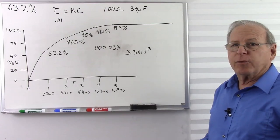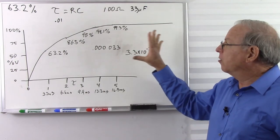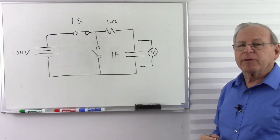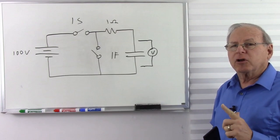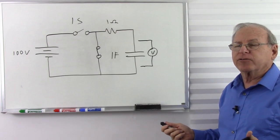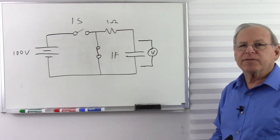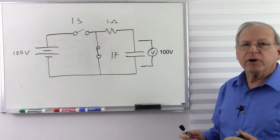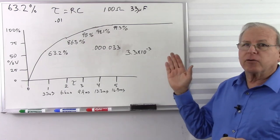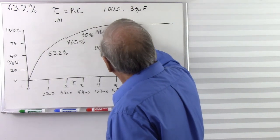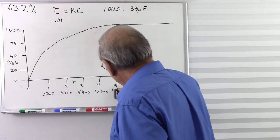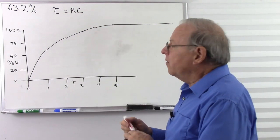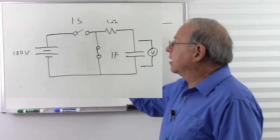Now, let's do a little editing magic to show a different circuit. We have the same circuit. I'm going to open the charging switch and close the discharging switch. The capacitor is now fully charged. Let's go back to 1 ohm and 1 farad, fully charged to 100 volts. Now I'm going to start discharging. Let's see what happens to the voltage as we discharge.